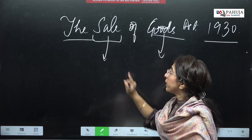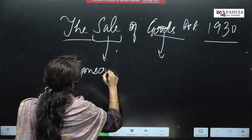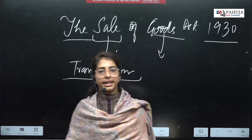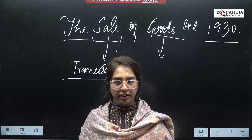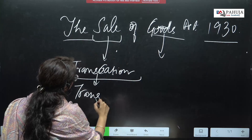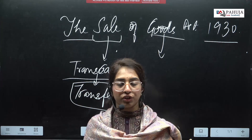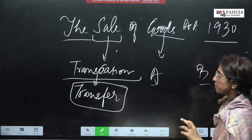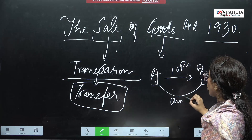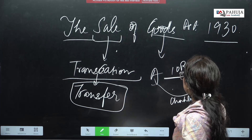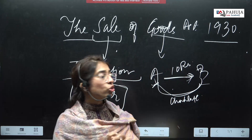Let's start with 'sale'. What do you mean by sale? Can I say that sale is any transaction — any buying, any selling, any trade? It is a kind of transfer. If A and B are two parties, A gives B some money — suppose rupees 10 — and B gives A a chocolate. So A is transferring something to B and B is transferring something to A. This transaction taking place — can we say this is sale? Yes, because B is selling something to me.